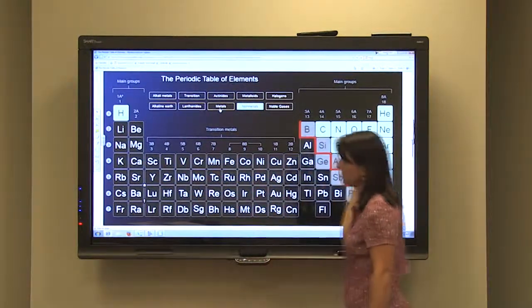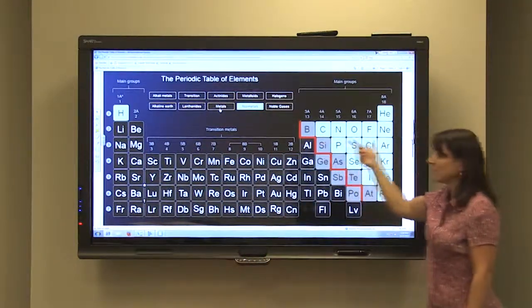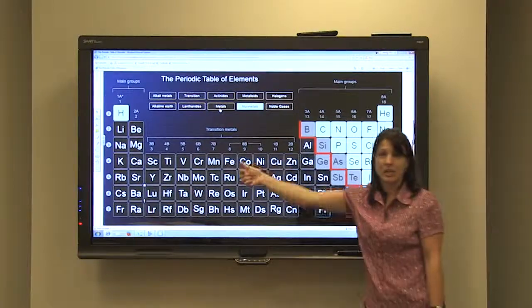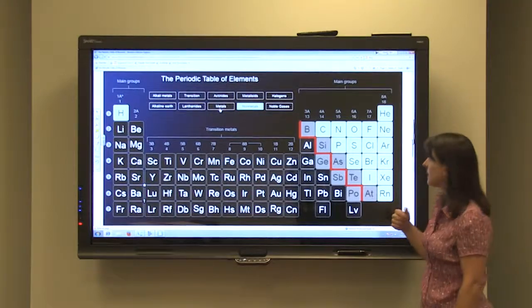So as we go across from left to right, we start with metals and then they change into metalloids into non-metals. So the metallic character is going to decrease as you go across the periodic table from left to right.